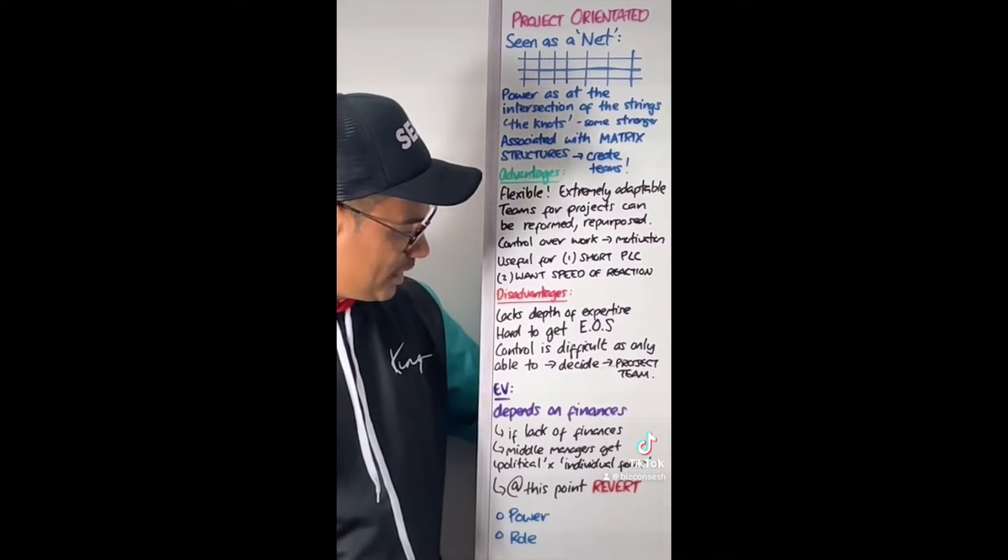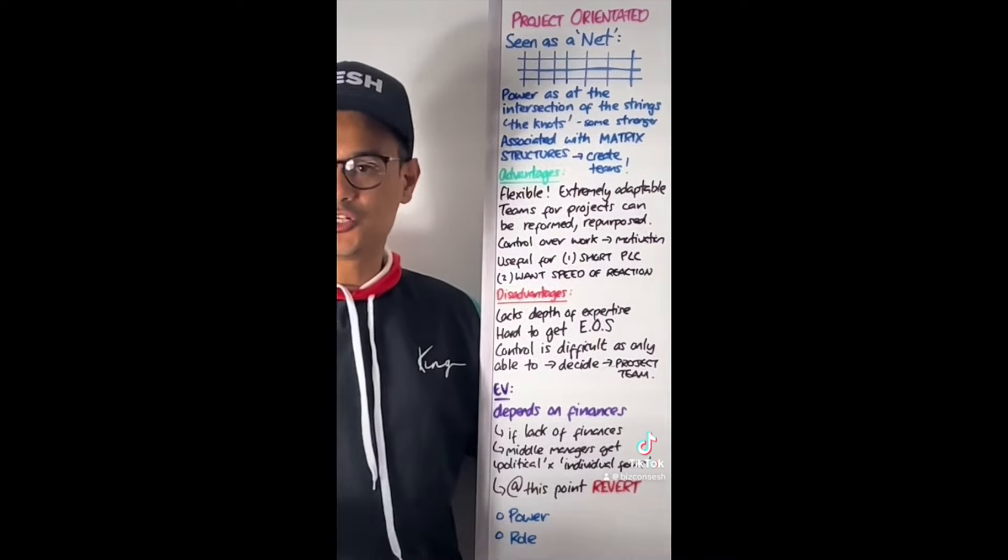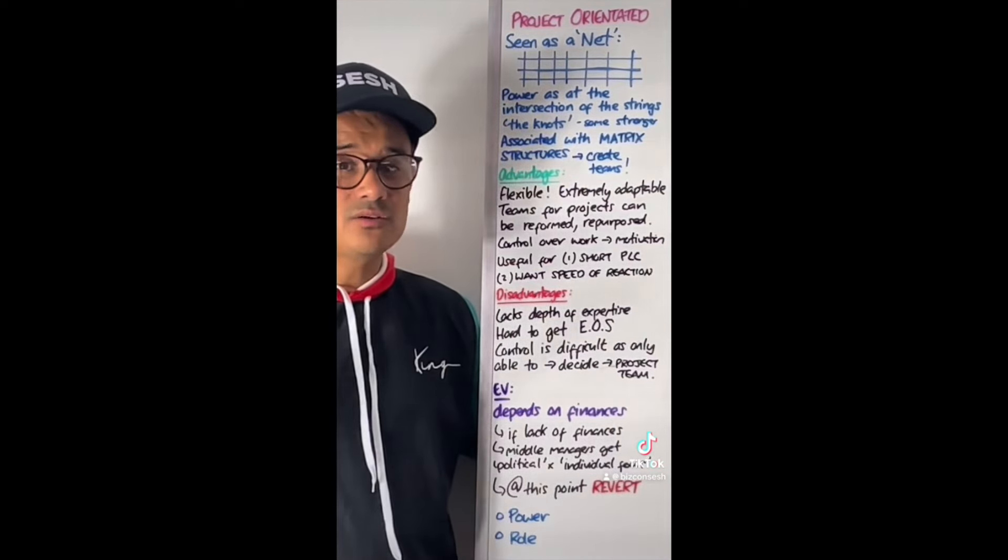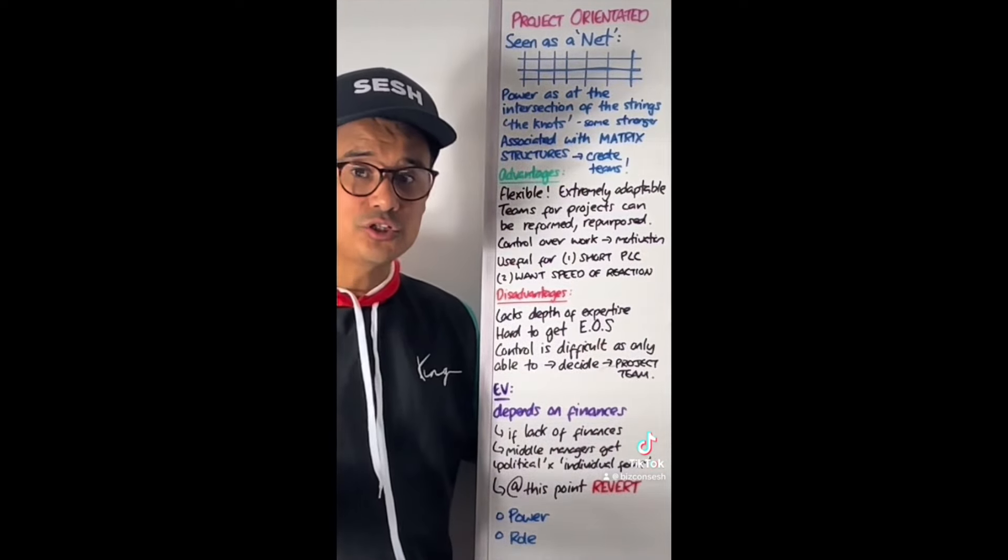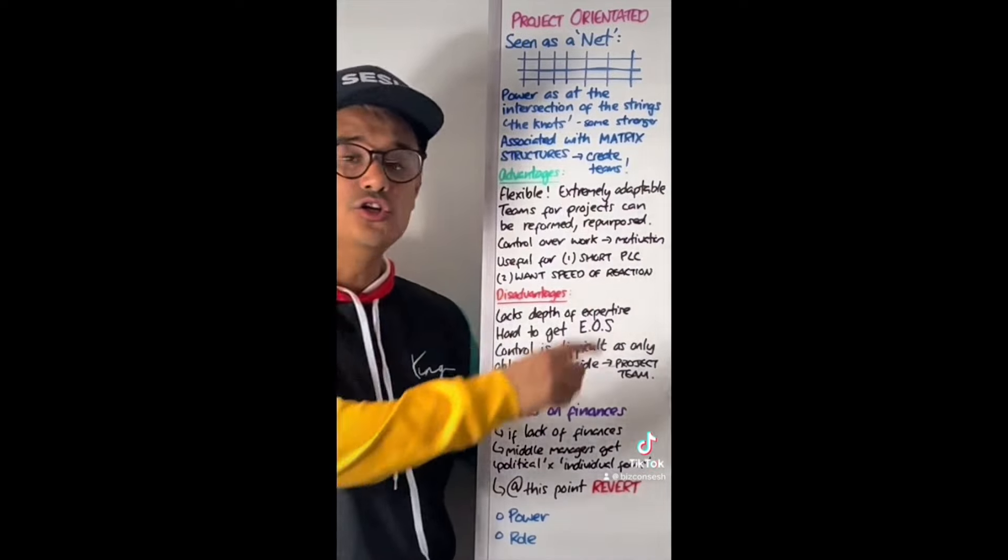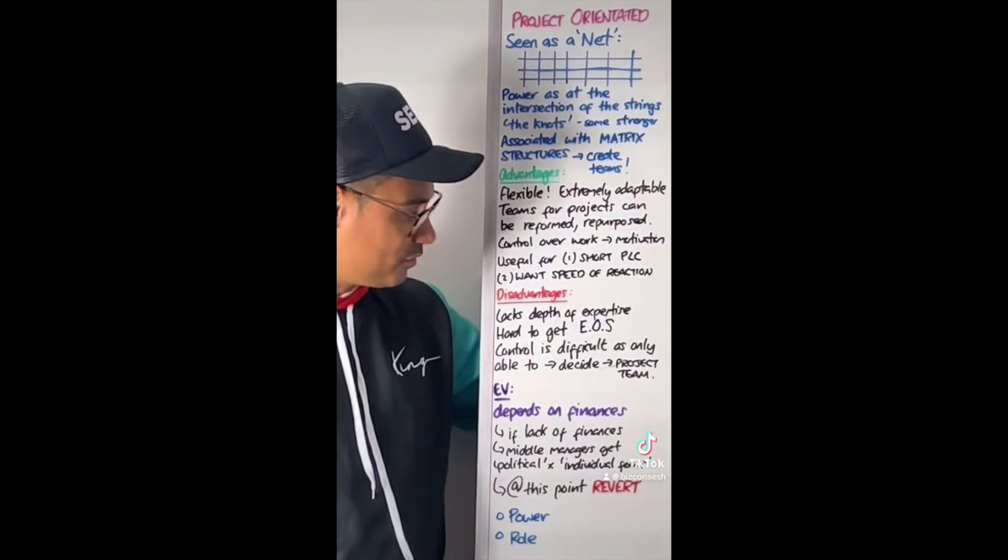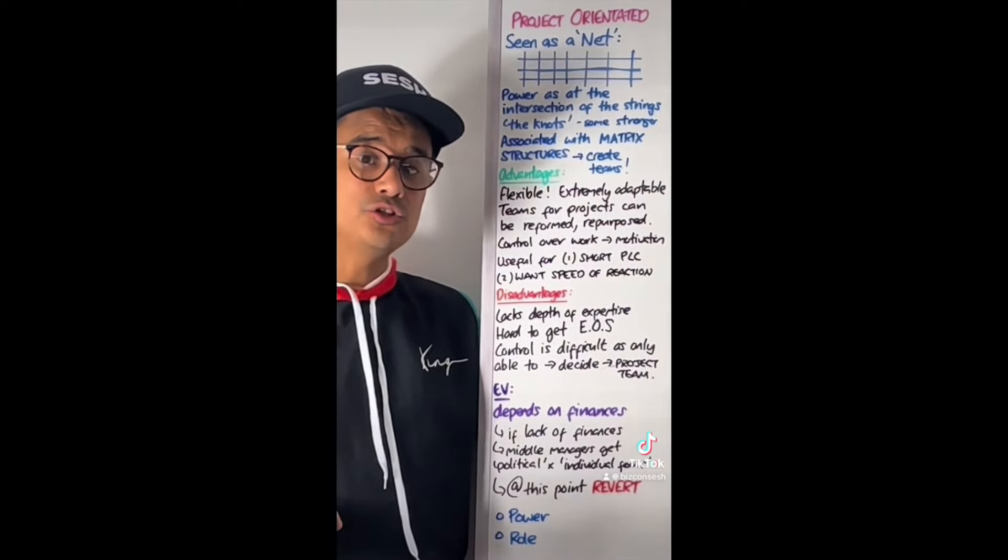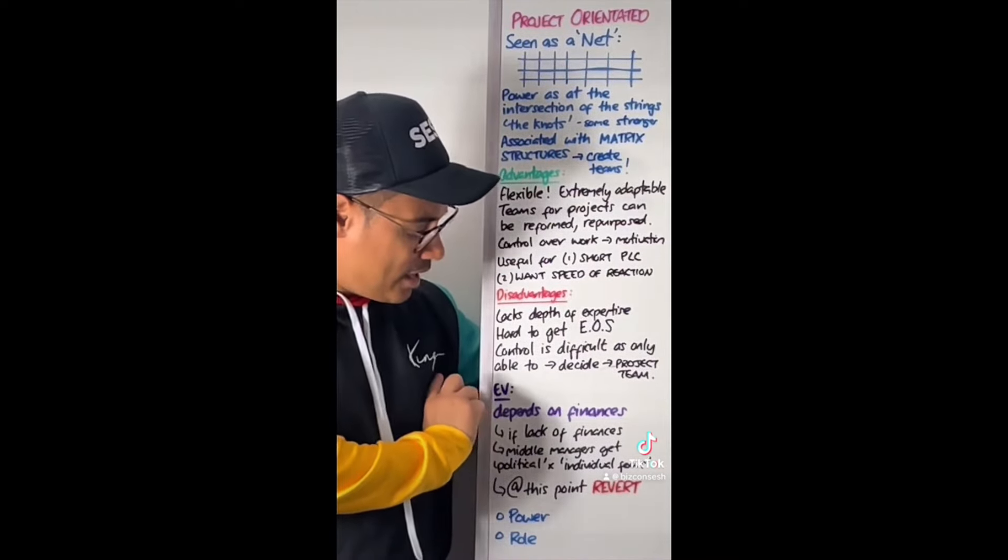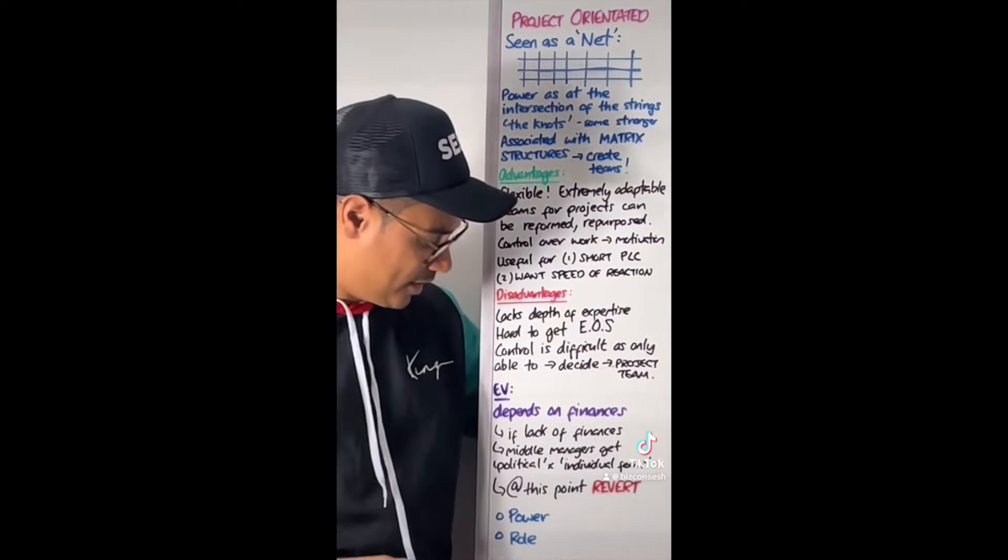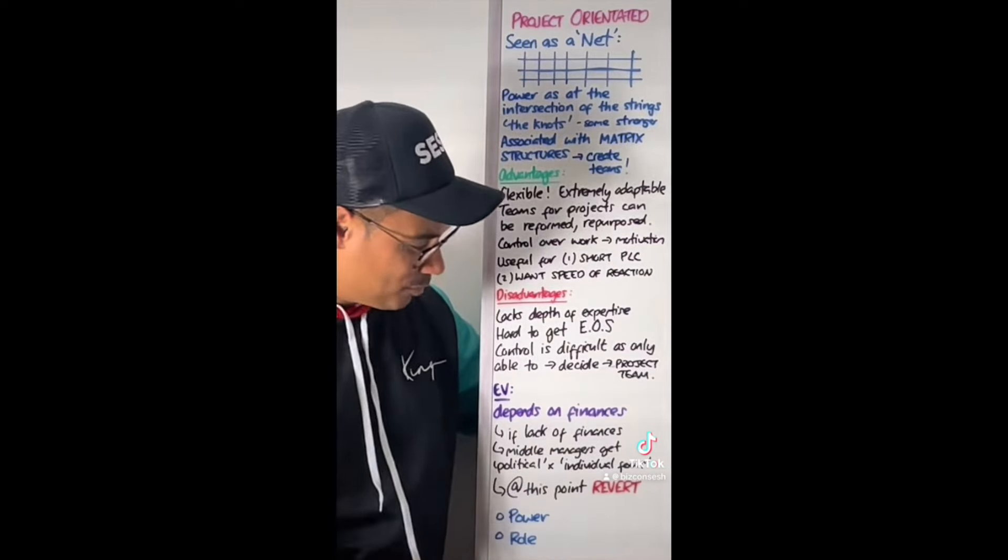Control is difficult here because the managers at the top, they're hard to control the workers because all they really control is who's on the project, how much resource is given to the project, and the time of the project. They very much trust the individual at the intersection, the knots, who are going to run the project and hopefully run it well for them.